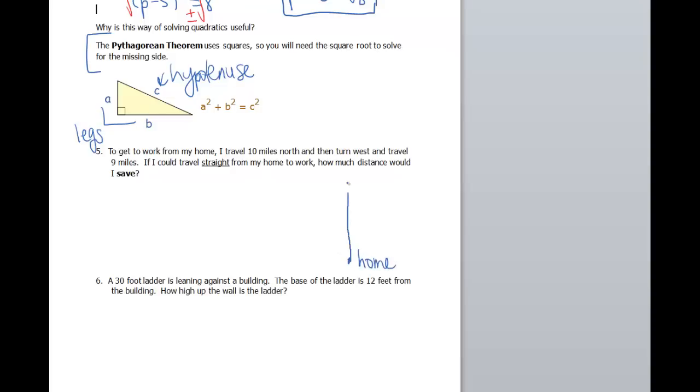I'm gonna travel 10 miles north, then turn west. That would be this direction and travel 9 miles. So this is 9 miles. If I could travel straight from my home to work, so straight.